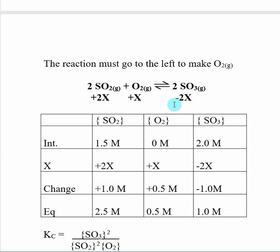And that is related to X, saying if I use up 2X of SO3, I make X of O2 and 2X of SO2. And then I look at the information given in the reaction, and I calculate X. And then from that, I find all the equilibrium concentrations.